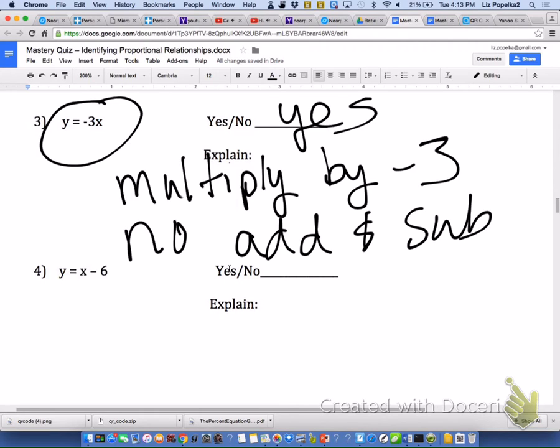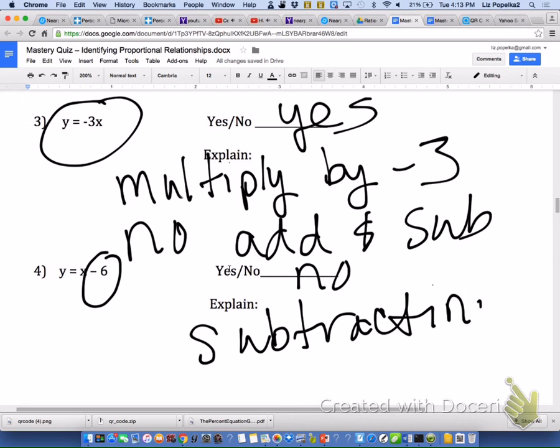For the same reason that number three is proportional, number four is not. Now you can see that is a minus 6 because the 6 is not sitting next to an x. So that does mean subtraction. Number four is no. The reason it is not proportional is because you are subtracting 6. Again, there is no adding or subtracting when you are dealing with proportional relationships.